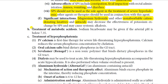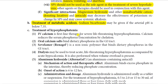Treatment of metabolic acidosis: sodium bicarbonate may be given if the arterial pH is below 7.35. The normal pH range of blood is 7.2 to 7.4, and the target is to bring it up to 7.35.